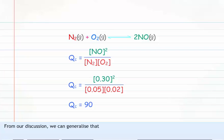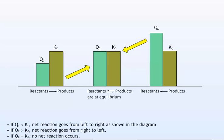From our discussion, we can generalize: If QC is less than KC, the net reaction goes from left to right, as shown in the diagram. If QC is greater than KC, the net reaction goes from right to left. If QC equals KC, no net reaction occurs.